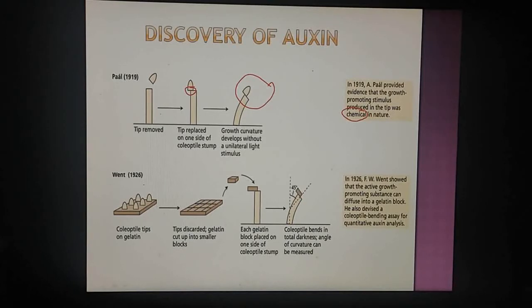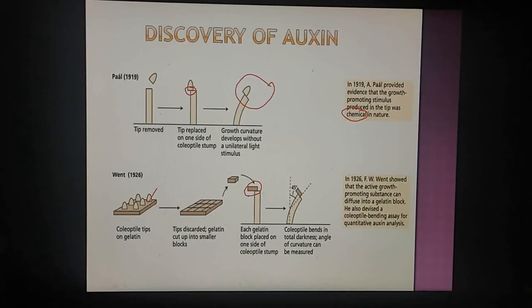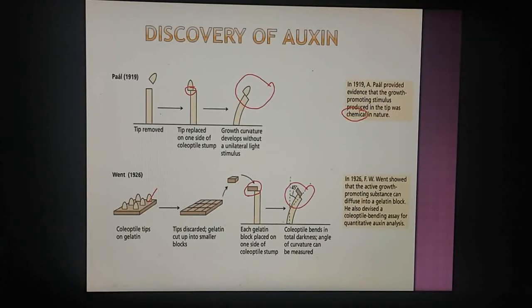In 1926, Went placed some coleoptile tips on gelatin. After some time he removed the tips and cut the gelatin into small blocks. When these blocks were placed on the remaining coleoptile portion, bending was observed. He concluded that the diffusible substance entered the gelatin and then diffused into the remaining coleoptile portion, causing bending.